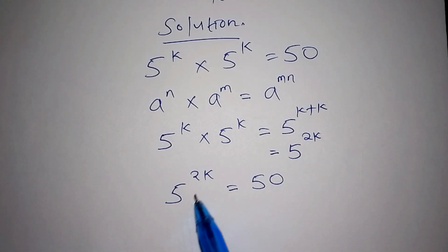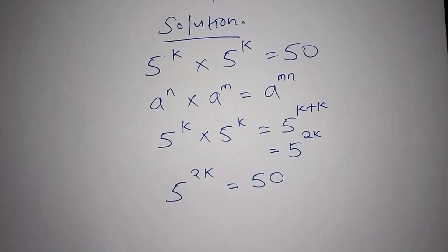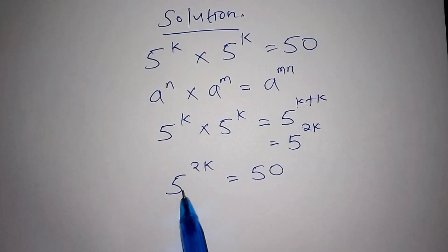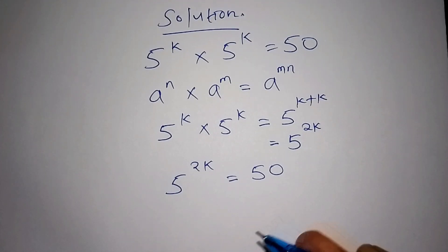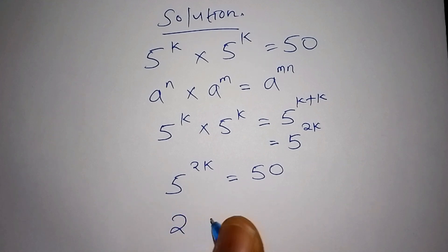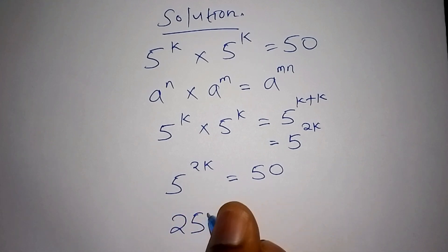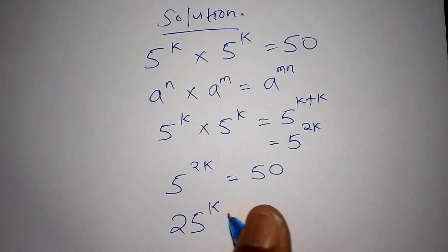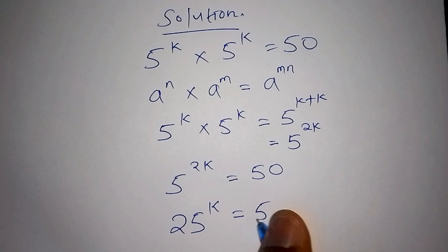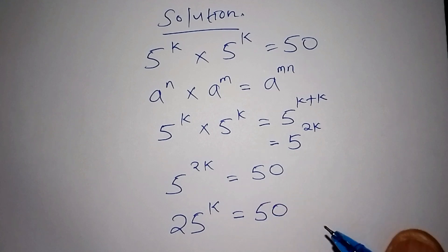So 5 to the power of 2k means we are going to multiply 5 to the power of 2, and 5 to the power of 2 is 25. So we shall have 25 to the power of k equals 50.